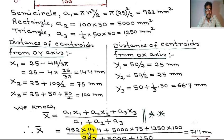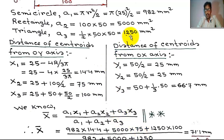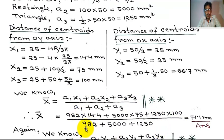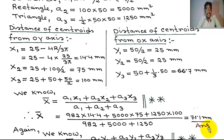Substituting values: numerator equals A1 times x1 equals 982 times 14.4, plus A2 times x2 equals 5000 times 75, plus A3 times x3 equals 1250 times 100. The denominator equals A1 plus A2 plus A3 equals 982 plus 5000 plus 1250. This gives x̄ equals 71.1 mm. This is the answer for x̄.